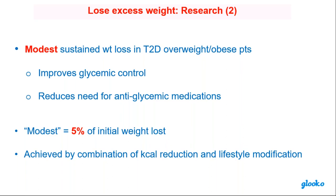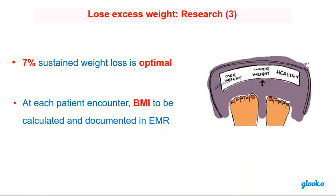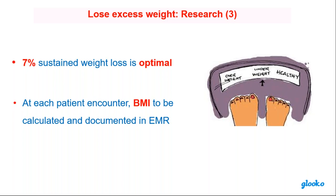Modest sustained weight loss in type 2 overweight patients does improve glycemic control and reduces the need for antiglycemic medications. Modest weight loss is defined as 5% of initial body weight, achieved by calorie reduction and lifestyle modification with an individualized meal plan. But 7% weight loss is optimal. And weight loss also improves blood pressure and lipid levels — triglycerides and LDL. For every three people with diabetes, two will meet their maker from heart attack or stroke — so controlling blood pressure and lipids is really critical.